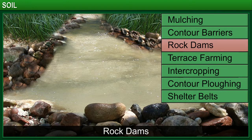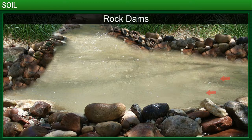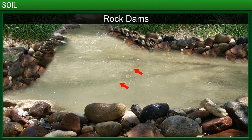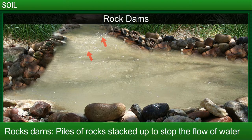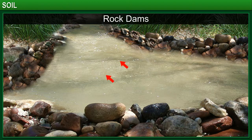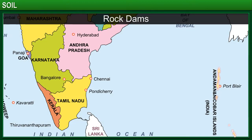Rock dams are dams created from piles of rocks that are stacked up to slow down the flow of water and prevent the formation of gullies. This curtails soil erosion. Rock dams are being extensively used as a soil conservation measure in the Andaman and Nicobar Islands in India.